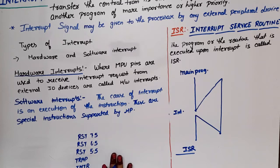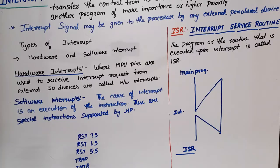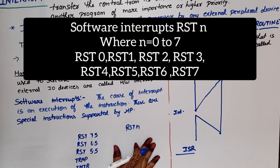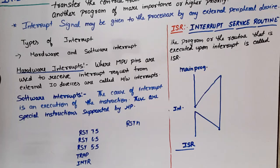Hardware interrupts are those where external pins are used by hardware devices to interrupt the processor. Software interrupts are when a programmer writes an instruction and the main program is interrupted or control is transferred to a different location — the cause of interrupt is the execution of an instruction. The software interrupt instruction is RST N. When this instruction executes, the main program transfers to a fixed location, executes the subroutine, and then returns to the main program.